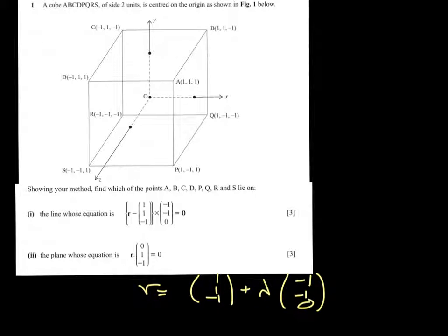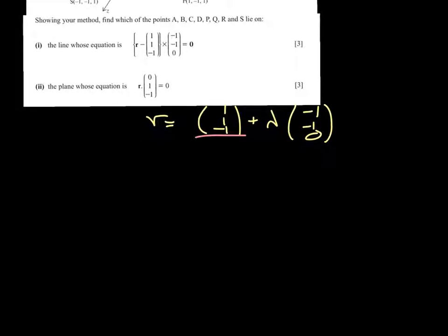And what I can see straight away is that B is (1, 1, -1), so it must lie on the line. So now we need to consider, the question has asked us to show our methods,